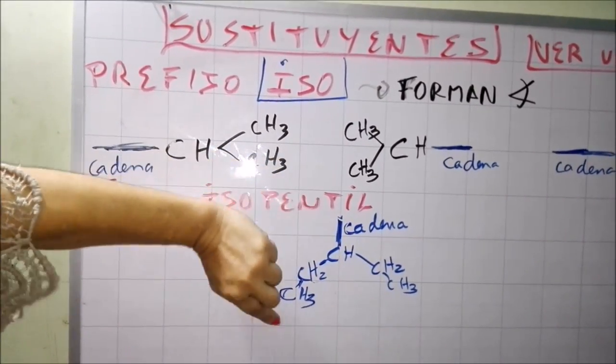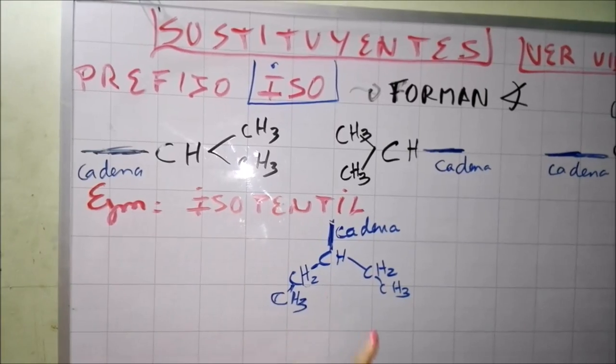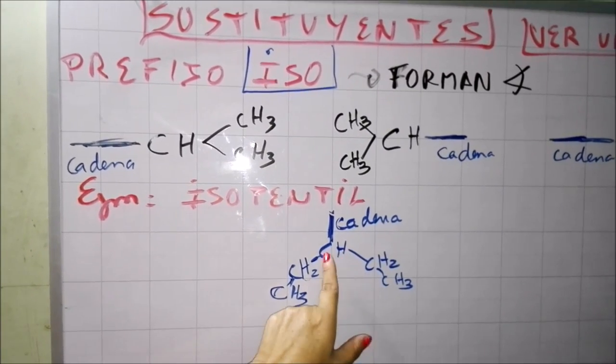CH2, CH3, CH2, CH3. Y porque se dice ISO pentil, porque si tú cuentas, mira, tengo 1, 2, 3, 4, 5.